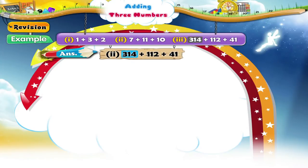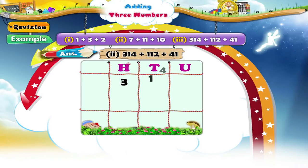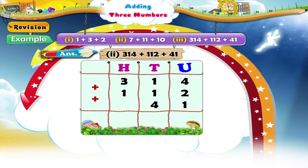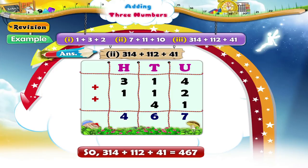Add three hundred and fourteen, one hundred and twelve, and forty-one. The numbers are already arranged vertically. We add four, two and one in the units place — we get seven. We add one, one and four from the tens place to get six. Three plus one from the hundreds place equals four. So the answer is four hundred and sixty-seven.